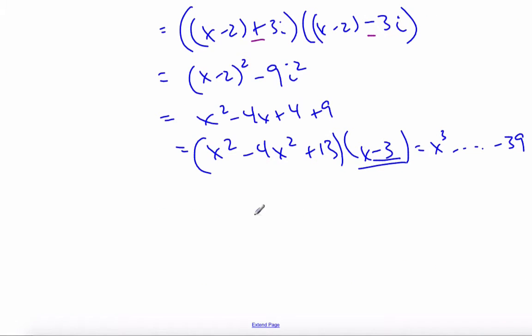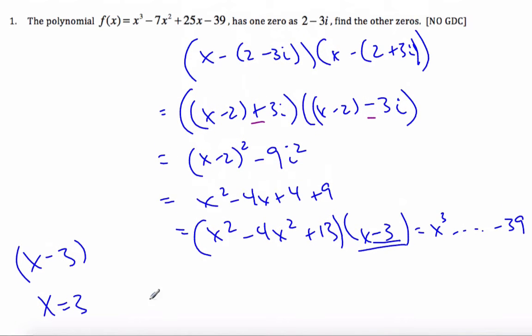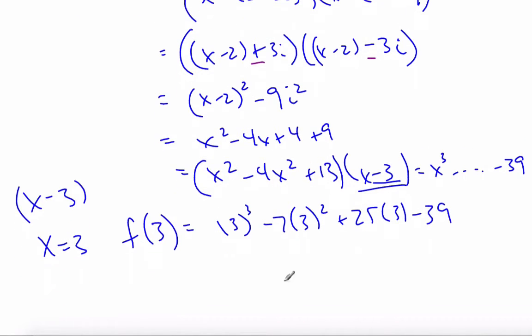So if I check x = 3, then x - 3 is the factor. Using the factor theorem, if I do x = 3 and plug it into this equation, I should get what I'm looking for: 3³ - 7(3²) + 25(3) - 39, which is 27 - 63 + 75 - 39.